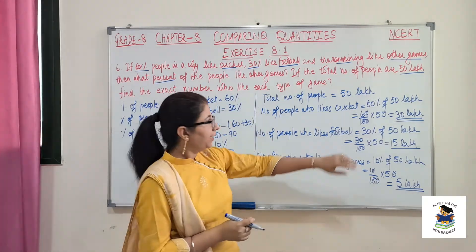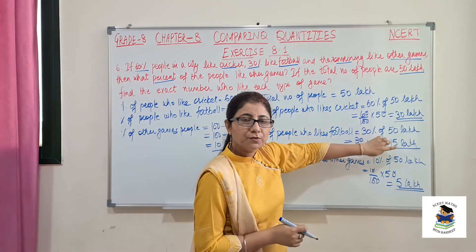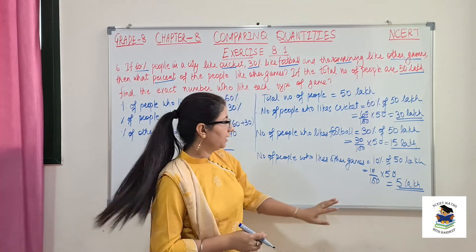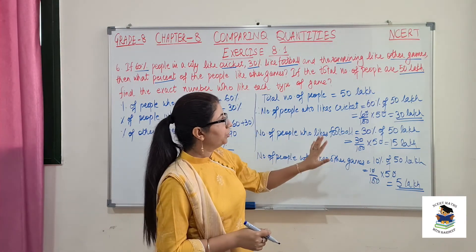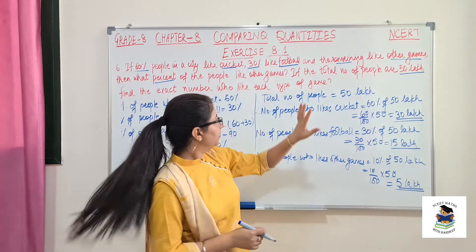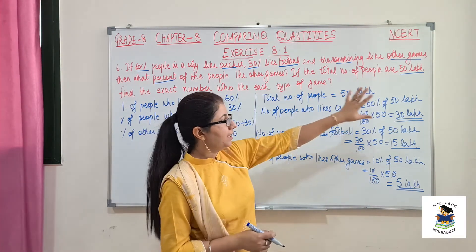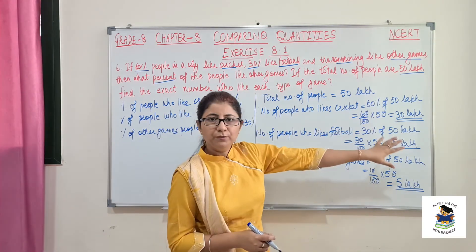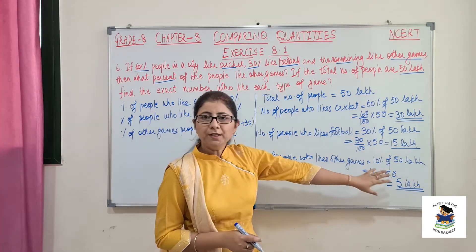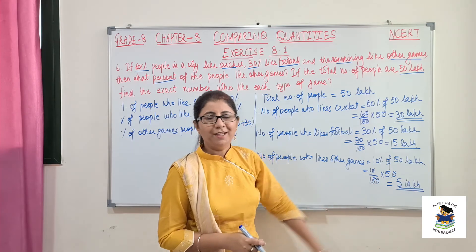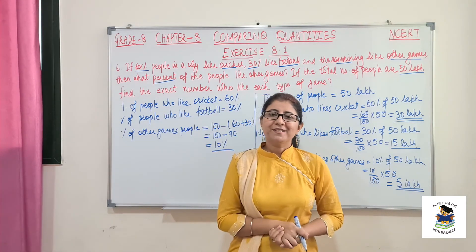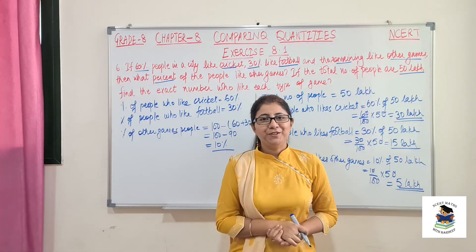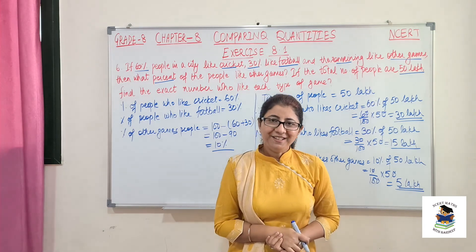We can verify: 30 plus 15 is 45, and 45 plus 5 is 50 lakh. So cricket has 30 lakh people, football has 15 lakh, and other games have 5 lakh. I hope you understood this exercise. See you in my next video with the next topic of the chapter. Thank you.